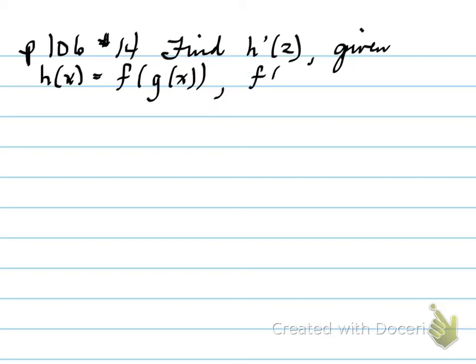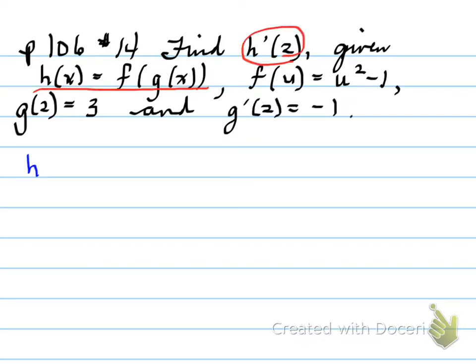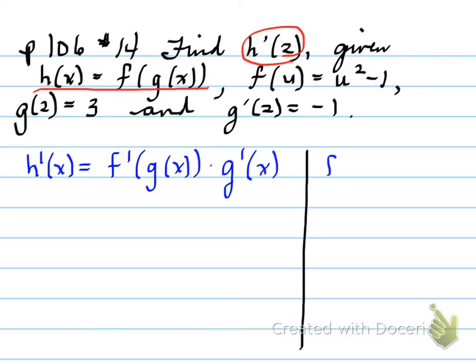Find h prime at 2, given h at x is equal to f of g of x, and f at u is equal to u squared minus 1. g at 2 is equal to 3, and g prime at 2 is equal to negative 1. What does all of this mean? We need to find the derivative of h first. The derivative of h is the derivative of a composition function, which is our composite function. F prime of g of x times g prime at x. What does that mean?